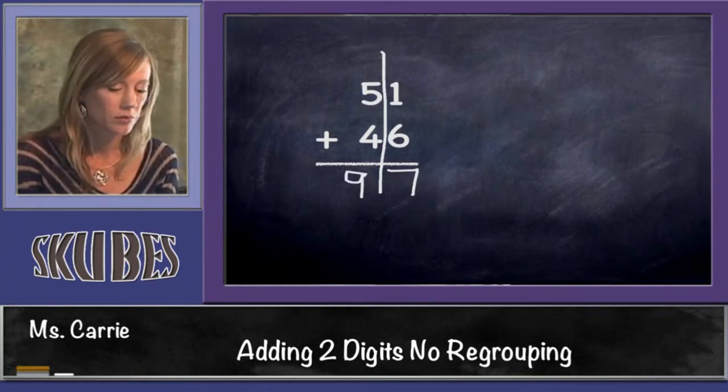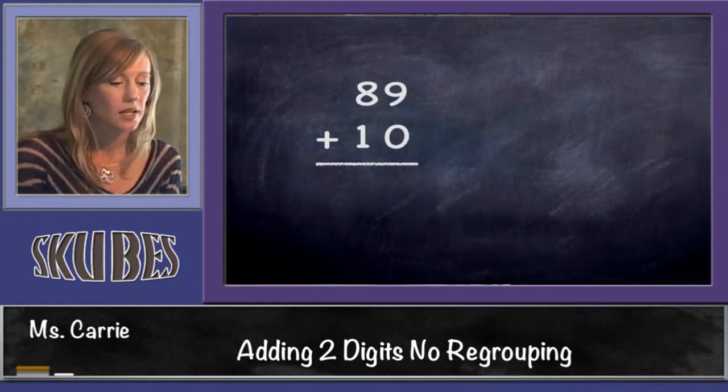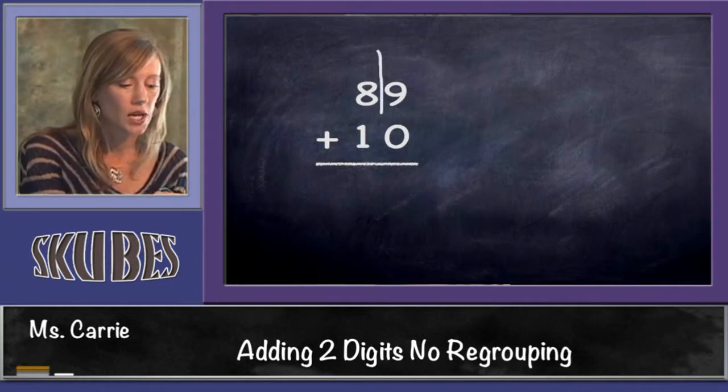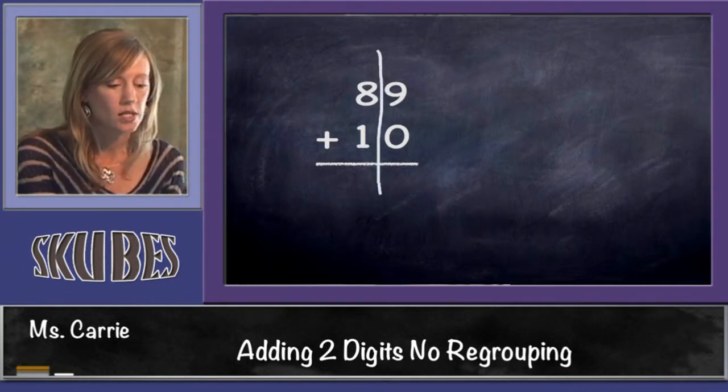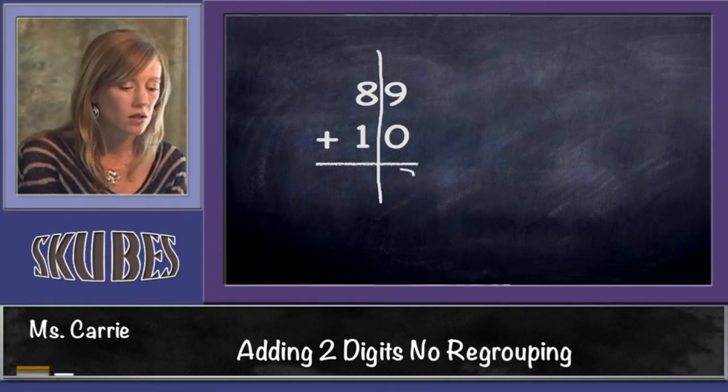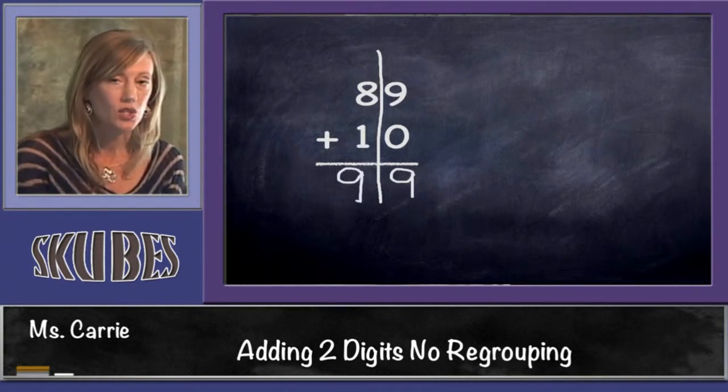Let's add some more numbers. Here we have 89 plus 10. I'm going to draw that line down the middle again to differentiate between the tens and the ones. We're going to start with the ones. We know that 9 plus 0 is 9, and 8 plus 1 more is 9. So our answer is 99.